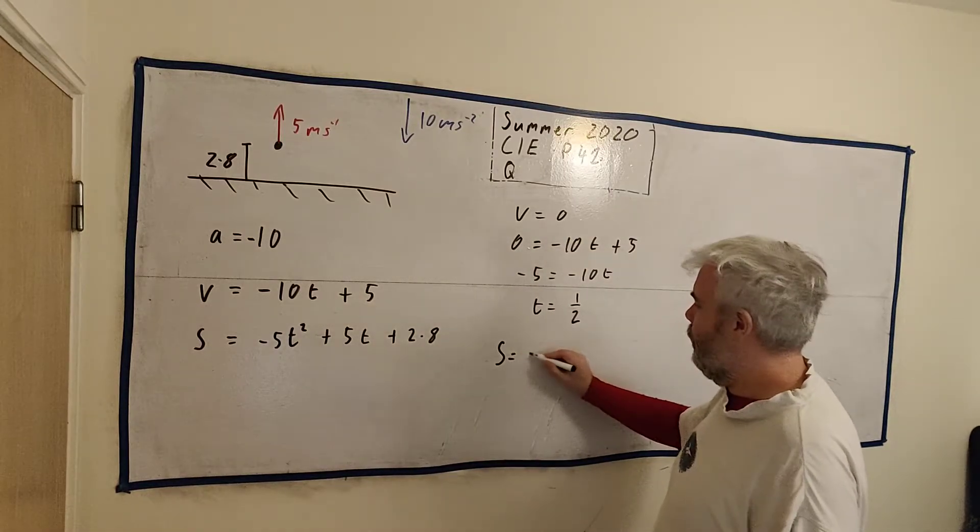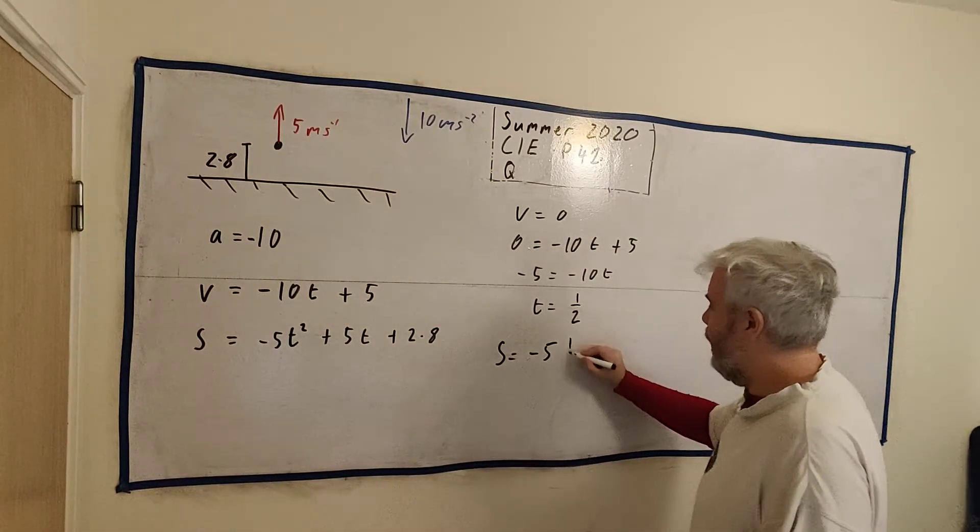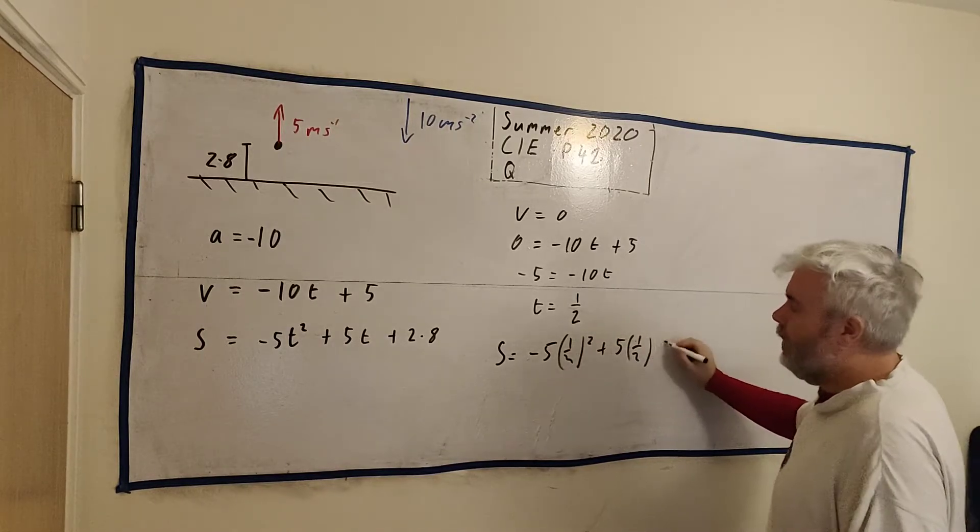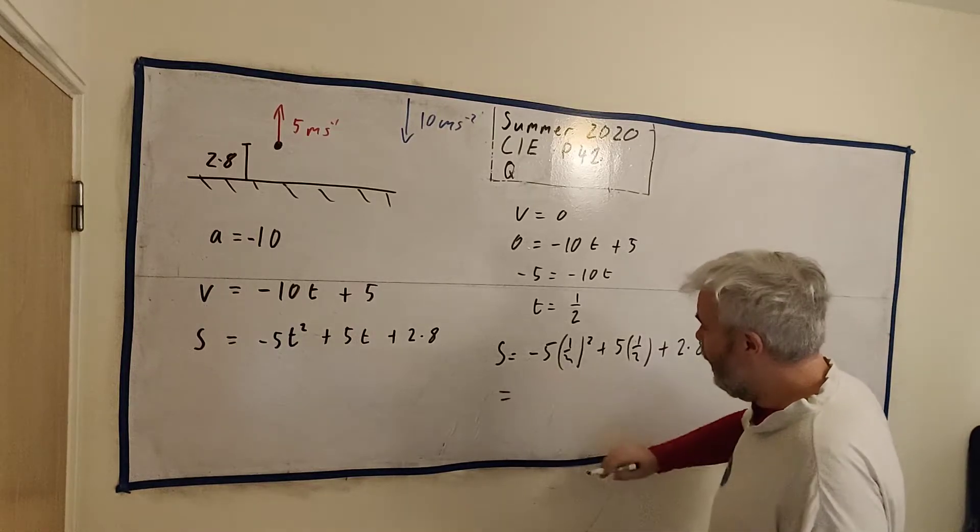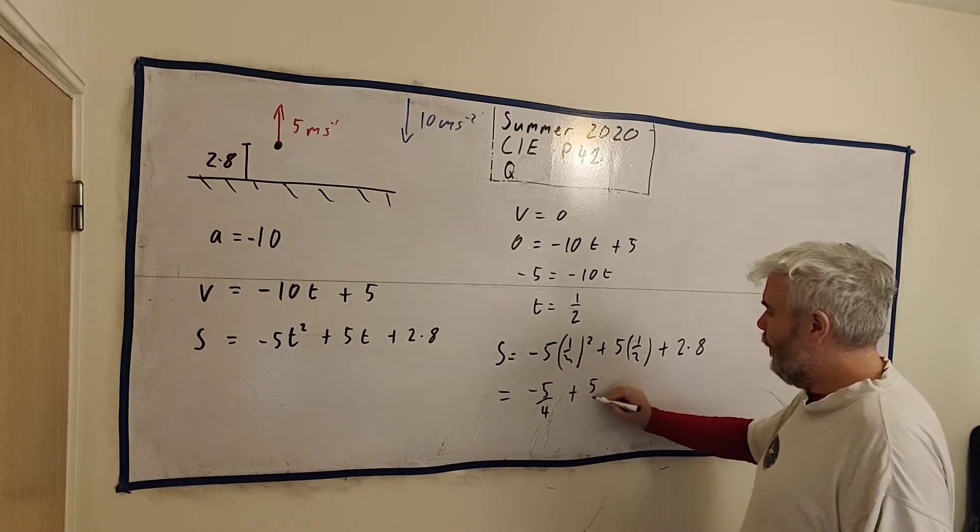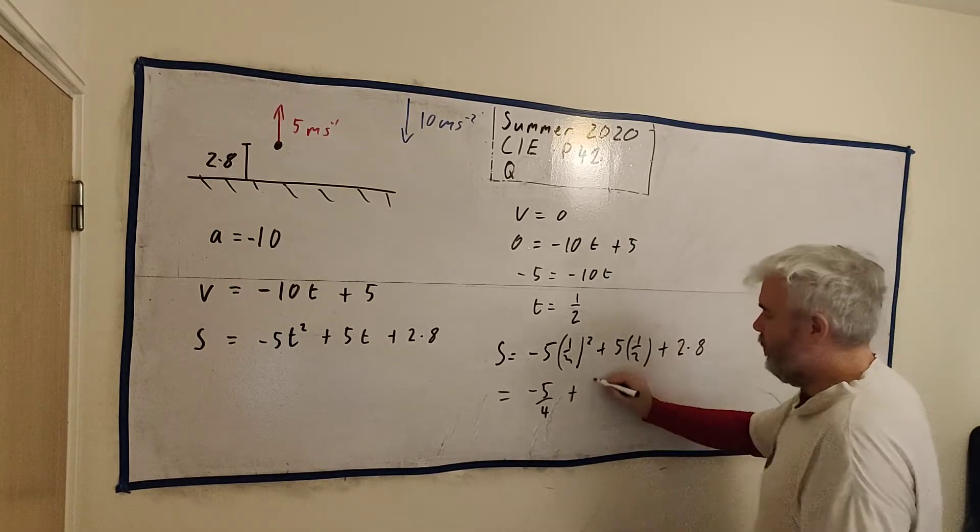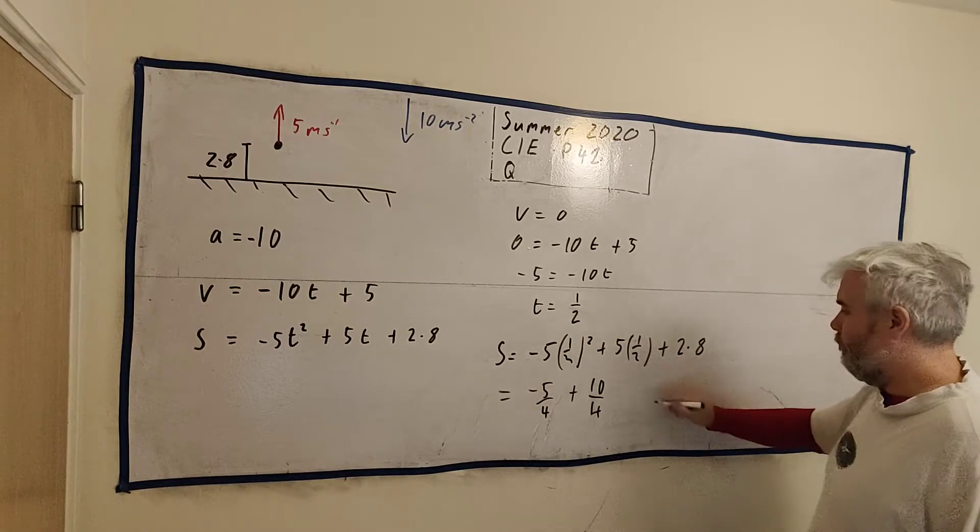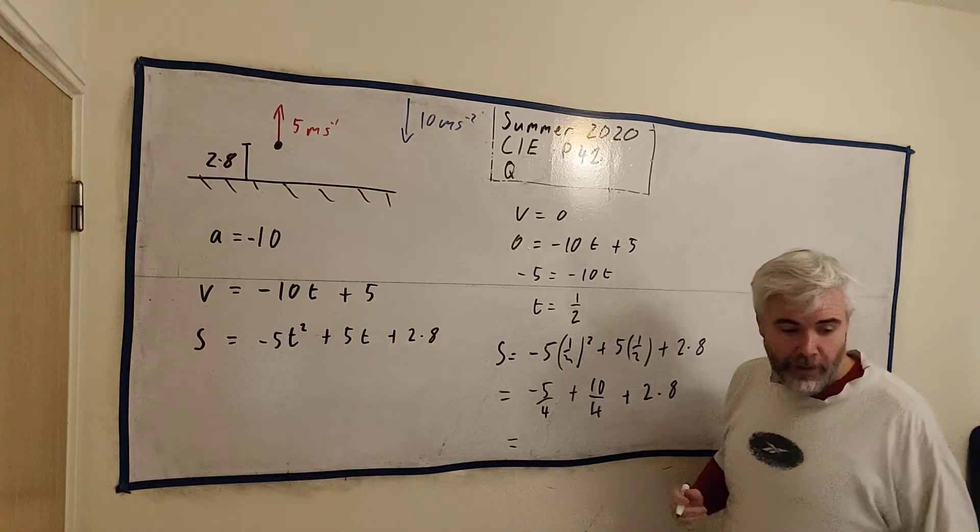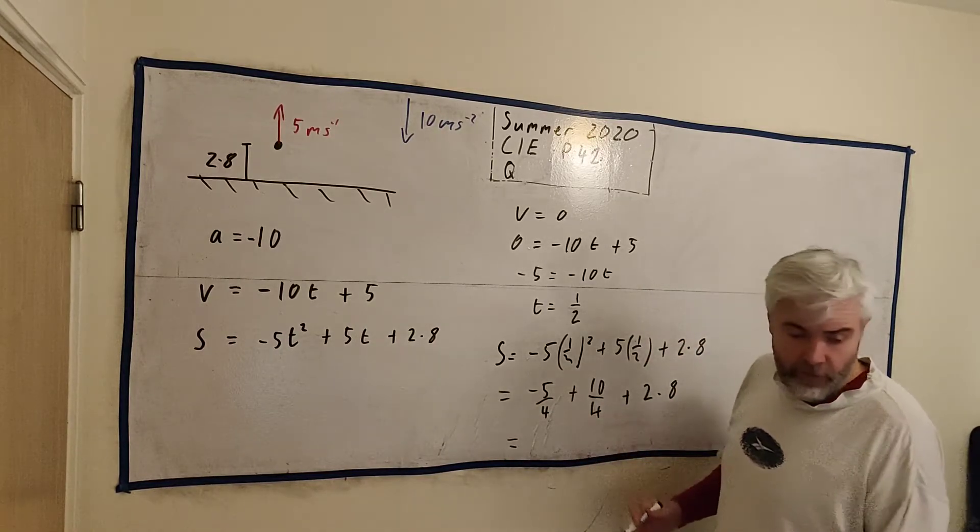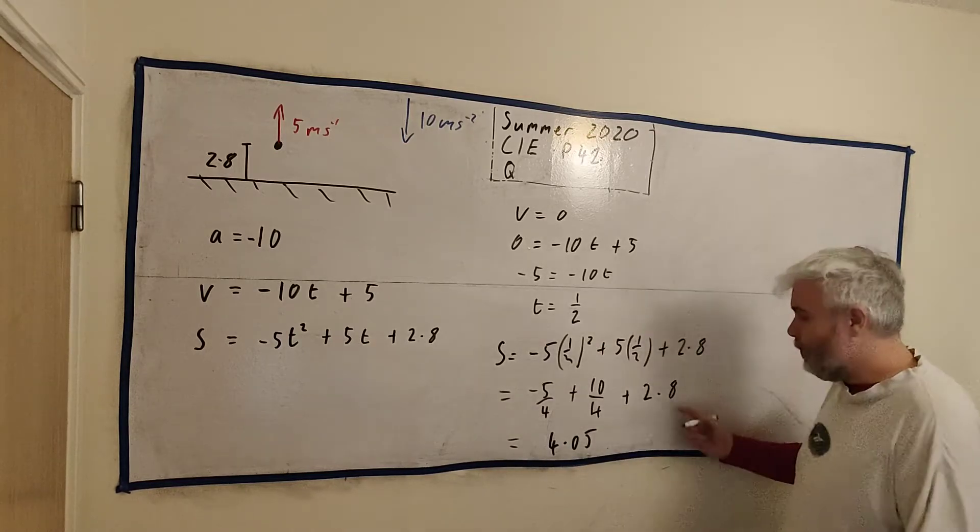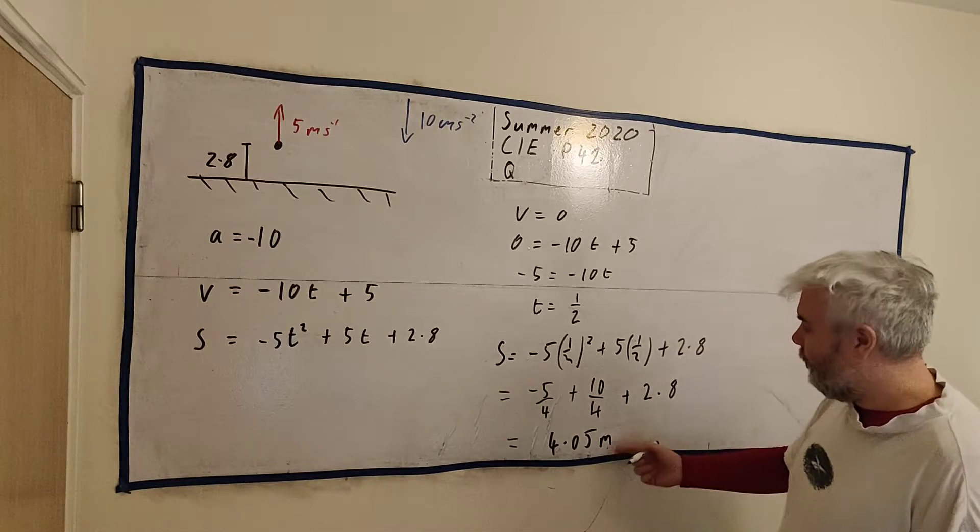Well here's the displacement. This is the height. So S equals minus 5 times a half squared plus 5 times a half plus 2.8. You can go ahead and put that in a calculator or do it by hand. It's 4.05 meters. That's above the ground.